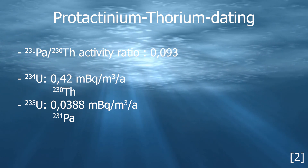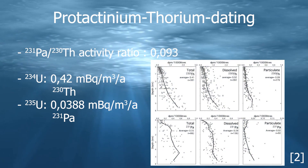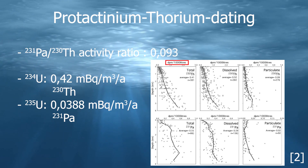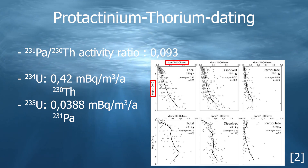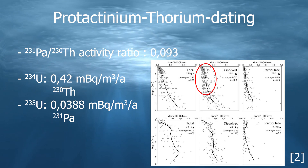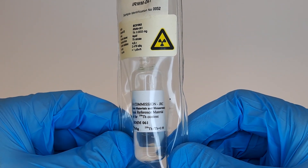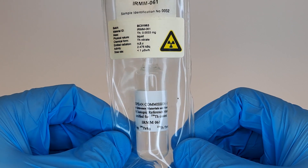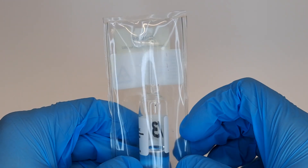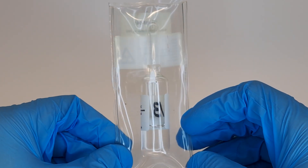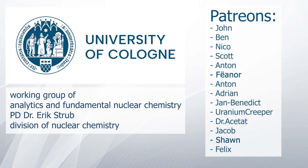Now, protactinium stays in the water longer while thorium is carried into the depths of the ocean. You can see this in the graph, where the activity concentration in decays per minute per 1000 liters is plotted against the ocean depth. The ratio of about 0.1 is considered in the axis. There is relatively less dissolved thorium in the upper ocean and more solid thorium in the deeper regions. This was a nice insight into the application of thorium-230 in paleoceanography, and I even learned something about another application of protactinium-231. Sources are always linked in the video description. A special thanks goes to the Working Group of Analytics and Fundamental Nuclear Chemistry from Dr. Erik Strupp and the Division of Nuclear Chemistry at the University of Cologne, and to my Patreons. Goodbye!